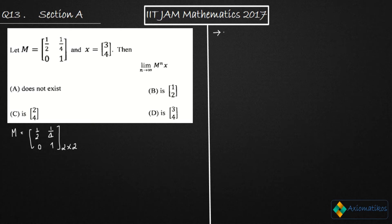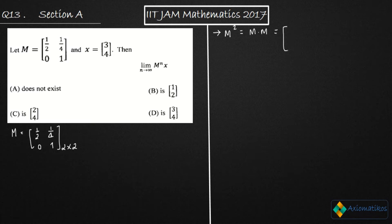My first step is to compute M squared, which is M·M. I have already done the calculation. After multiplying the matrix, you will get M² = [[1/4, 3/8], [0, 1]].